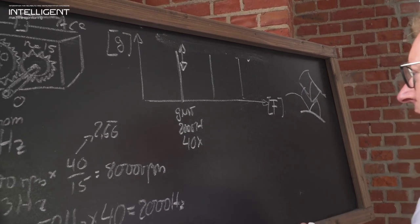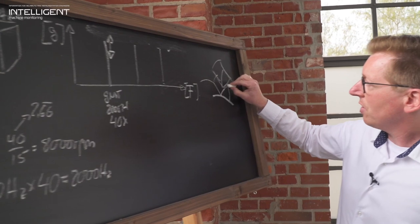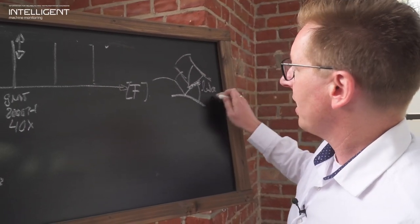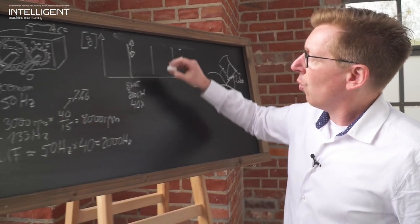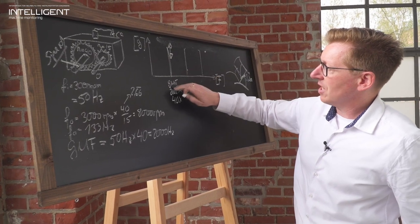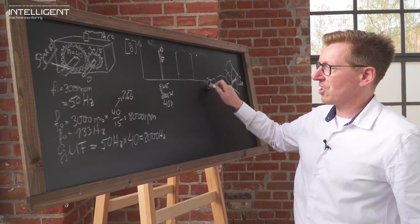in a loading situation load will increase or decrease this peak in amplitude. So load as well as lack of lubrication, having lubrication between these two components is a very key element. Lack of lubrication as well as loading change will be visible in the height of the amplitude of those gear mesh frequency peaks in the spectral data.